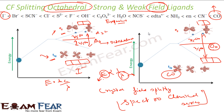The color of a complex relates to this: the compound absorbs one color and reflects the other six colors of sunlight. From the color absorbed, you can find the wavelength, calculate the energy required, and determine whether it is a strong or weak field. More energy required means strong field; less energy required means weak field.